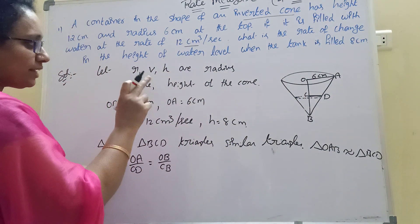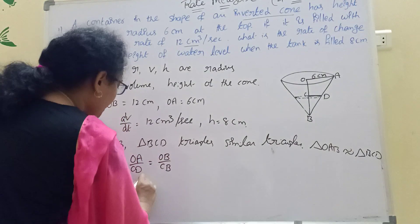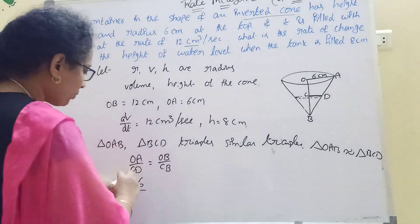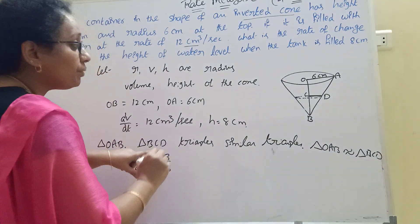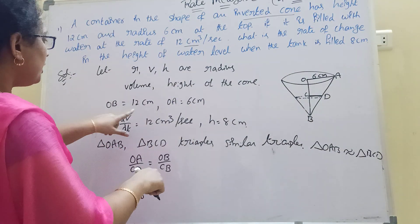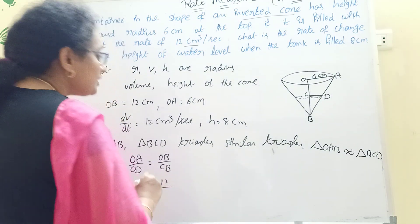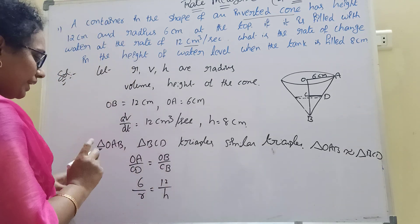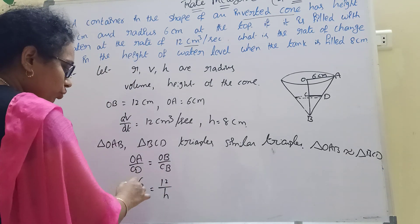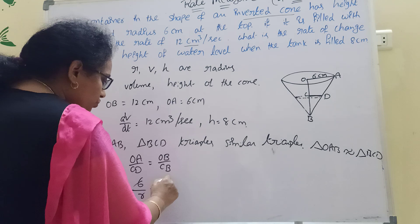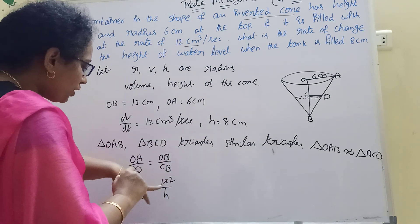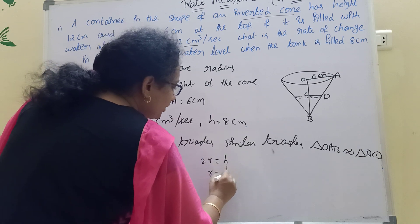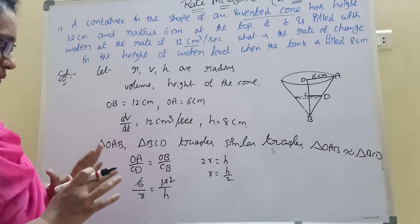6 divided by CD. Taking CD as r, OB as height 12, CB as h. The ratio is 6 to 12. Therefore 2r equals h, which gives us r equals h by 2.